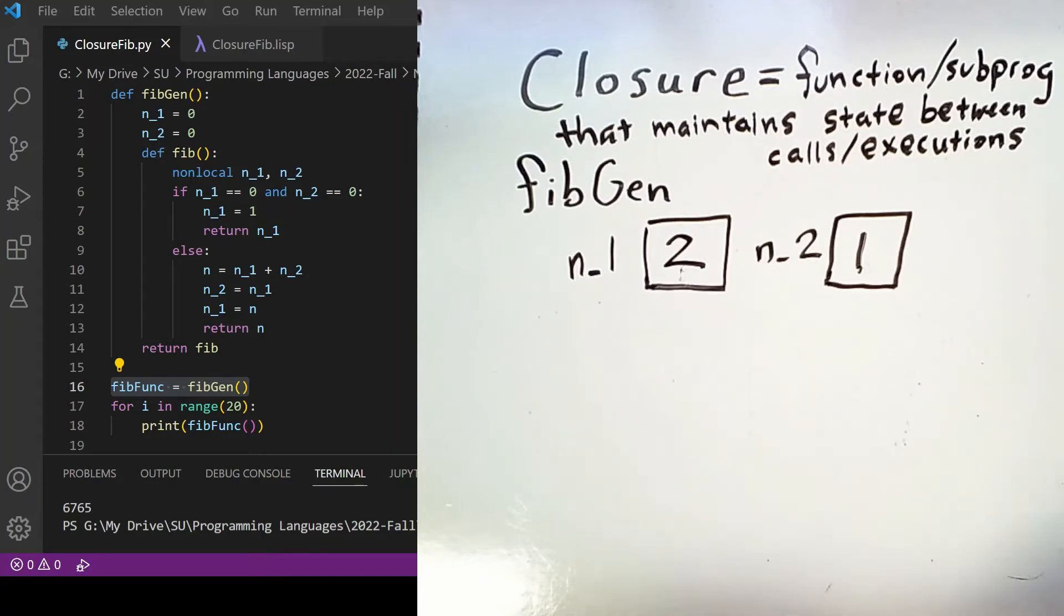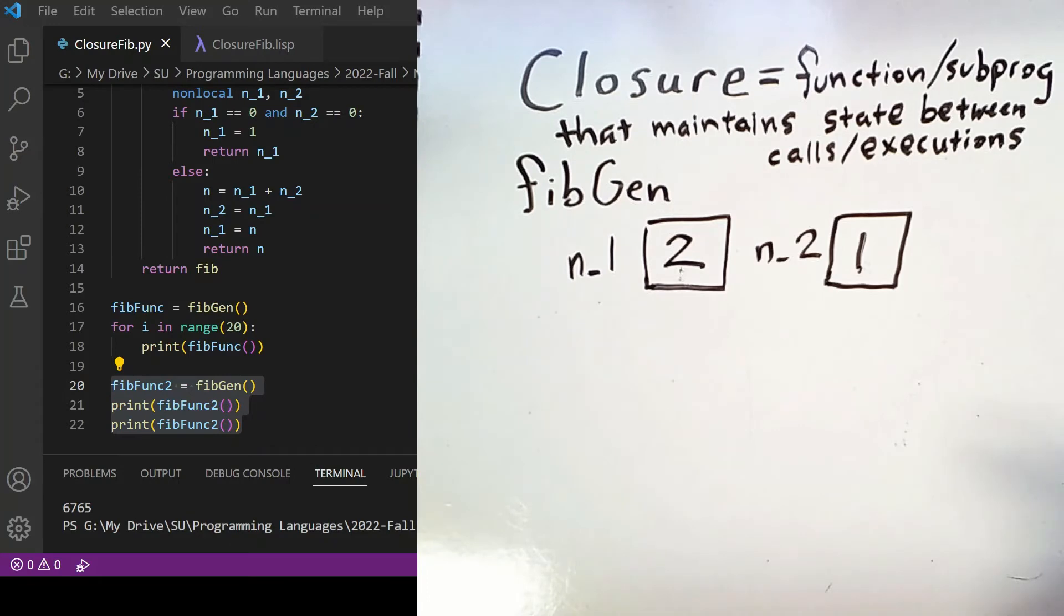So you can see how repeated calls to this nested subprogram—this closure—keep giving us sequential values in the Fibonacci sequence. But what if we call fibgen again? Now I have a second variable fibfunc2, and I'm going to call that as a function and see what it produces.